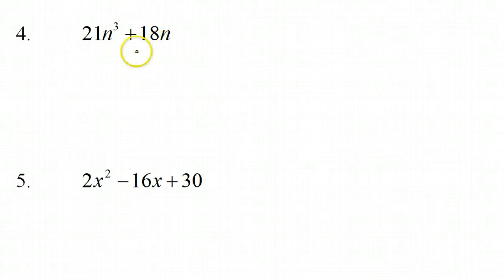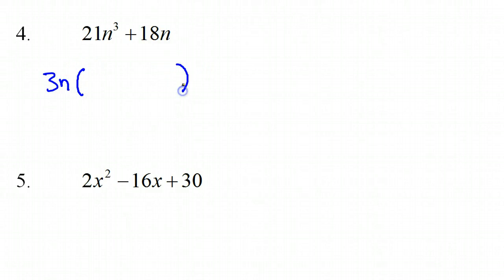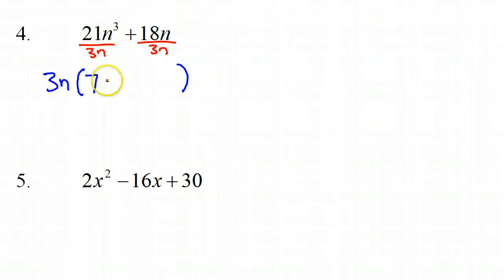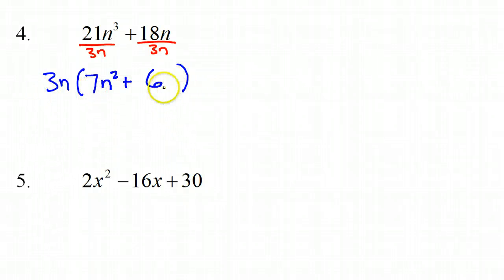Number 4. The first step of factoring is to look for a common factor. I see that both of these are divisible by 3 and they both have an N, so 3N is the greatest common factor. I'll bring that out of parentheses. When you factor out a common factor, you divide by it. 21 divided by 3 is 7; N cubed divided by N is N squared; 18 divided by 3 is 6; and those N's cancel completely. Looking on the inside to see if we can factor further — this is not a sum of cubes or difference of two squares, so this cannot be factored any further. That's the final answer.